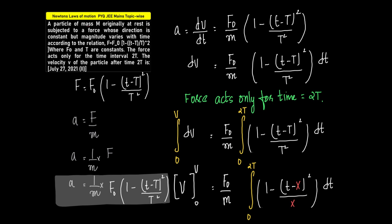So I've written all the steps in detail. We'll divide the solution into two halves. What is given: F = F₀ × (1 - (t - T)²/T²). We need to find velocity. Acceleration a = F/m, so a = (1/m) × F₀ × (1 - (t - T)²/T²).